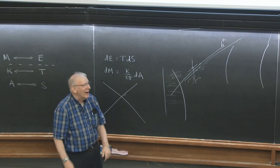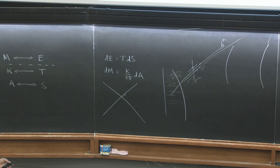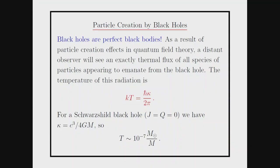That is true in general relativity and true here for black holes. There are like three or four incredibly amazing things all packed into this one calculation. Just that you get a steady, non-zero flux is amazing. That the flux is exactly thermal is really amazing. And that the temperature of this is the surface gravity is maybe even more amazing.